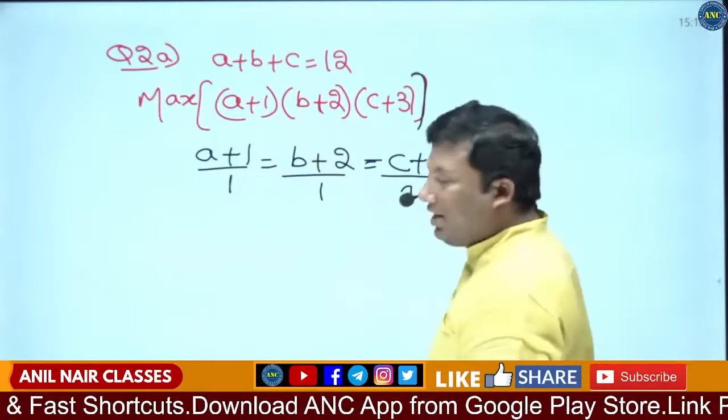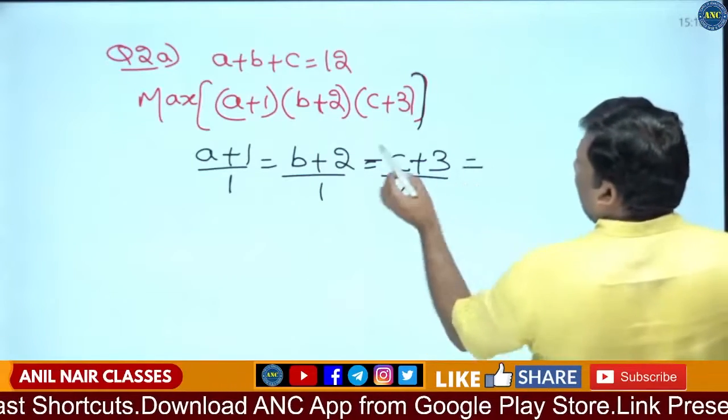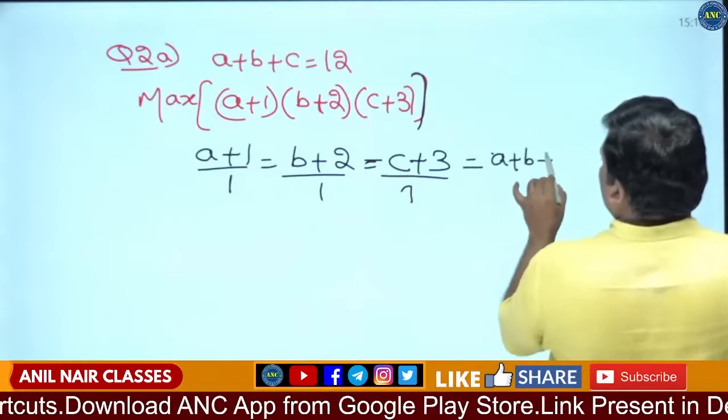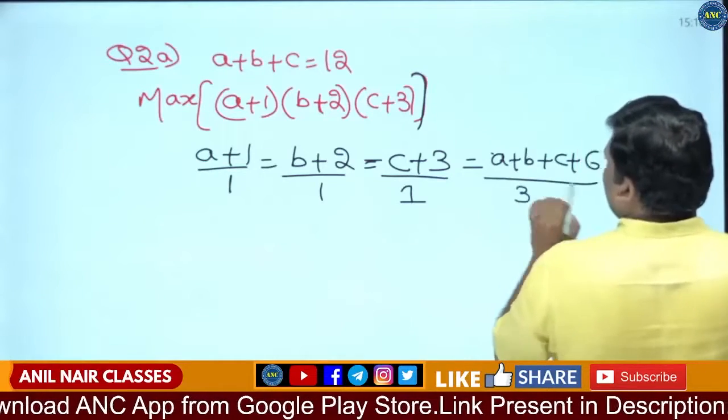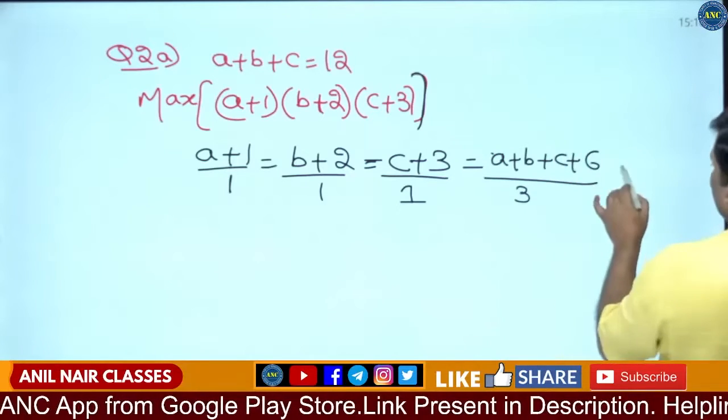The degree of all of these is 1. So if I add it: A plus B plus C plus 3 plus 2 plus 1 equals 6, divided by 3. A plus B plus C is 12, so 12 plus 6 is 18, 18 by 3 which is 6.